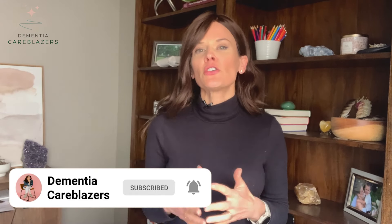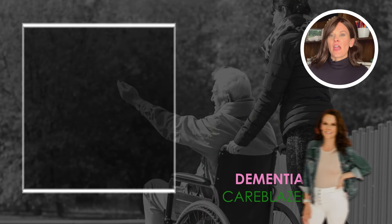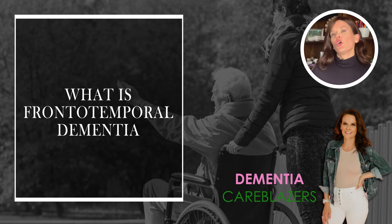Frontotemporal dementia is often referred to as FTD for short. It gets its name from the areas of the brain that are most impacted, which are the frontal lobes and the temporal lobes. So if we're looking at a brain here, the frontal lobes are affected in frontotemporal dementia, and the temporal lobes, which are kind of just below your temples.